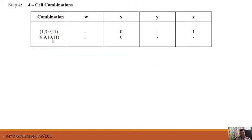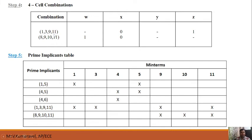After the 4-cell combination, we proceed to the prime implicant table. In the prime implicant table, we include the 4-cell combination data first: combinations 1,3,9,11 and 8,9,10,11. We should include only the minterms — not the don't care conditions. So 6 and 8 are don't care and not included as column headers. The minterms in the table are: 1, 3, 4, 5, 9, 10, 11.